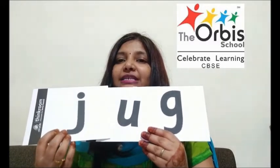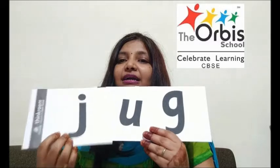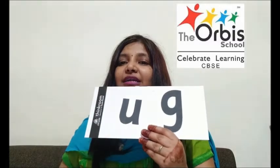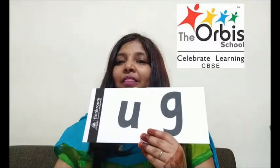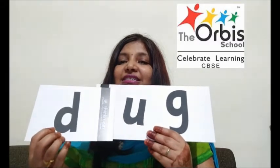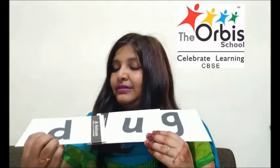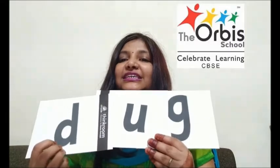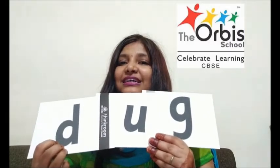The sound of J is 'j'. So J, UG, JUG. Next one. D. The sound of D is 'd'. D, UG, DUG.